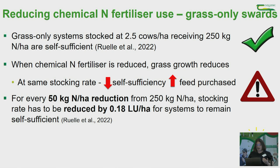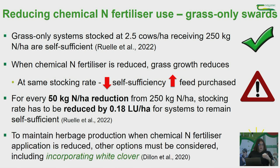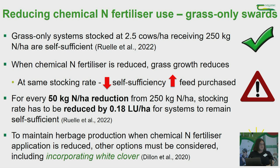If we want to maintain herbage production in an environment of reduced chemical fertilizer use, there are other things we can do: improving soil fertility, making better use of slurry nitrogen, and the one I'm going to focus on today — incorporating white clover into our systems.